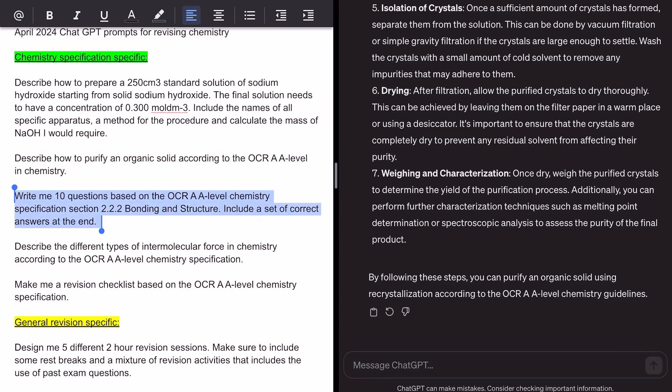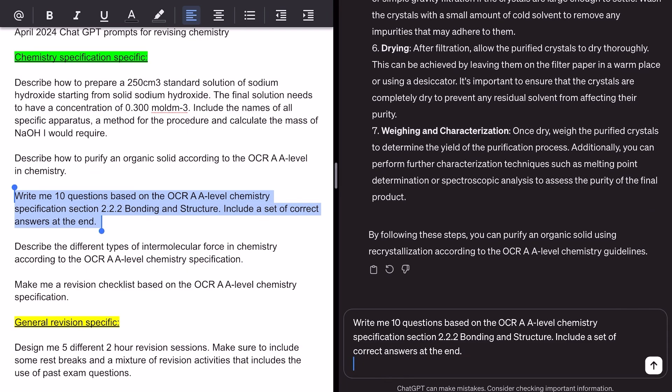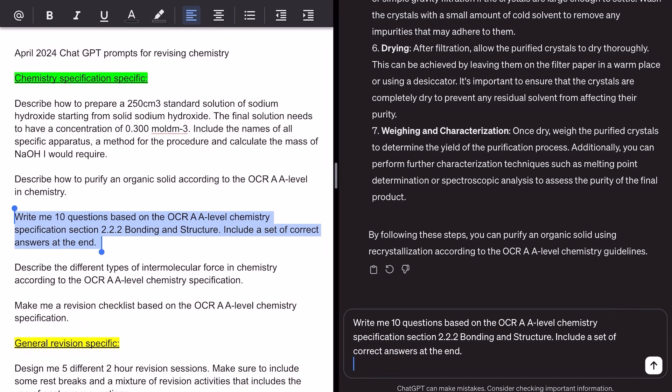Let's move on to the next one. And here, what we're going to do is we're going to look to see if it can write me 10 questions based on a specific section of the specification. And I've given it the reference. I've said it's section 2.2.2 of the OCR A A-level in chemistry spec, and it's the bonding and structure. And what I want are 10 questions and answers. Let's see how it does for this one.